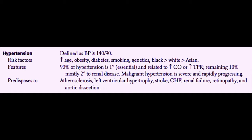Next, we will discuss systemic hypertension. Systemic hypertension is defined as a blood pressure greater than or equal to 140 over 90 millimeters of mercury, and this is a measurement that should be made at least three separate clinic visits.